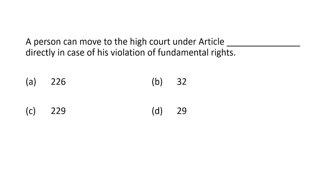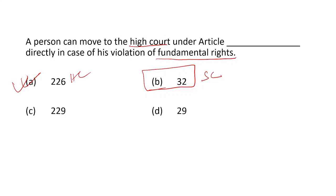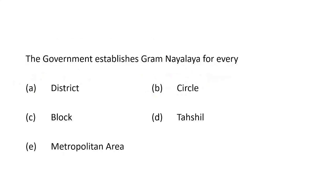A person can move to the High Court under Article 226 directly in case of violation of fundamental rights. A person can also move directly to the Supreme Court under Article 32. So Article 32 is for the Supreme Court and Article 226 is for the High Court. The government establishes Gram Nyayalayas for every block.